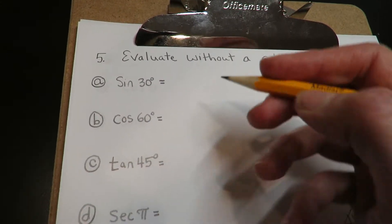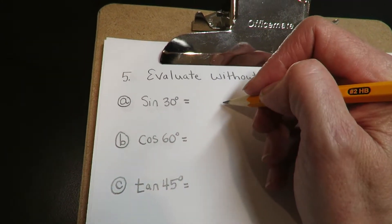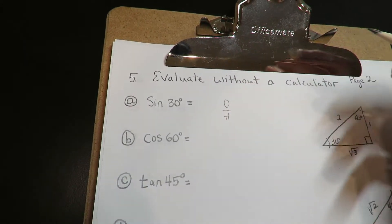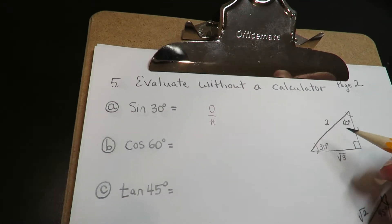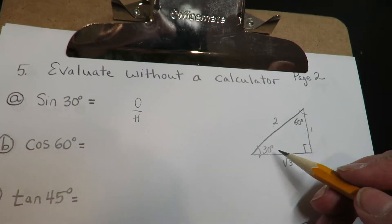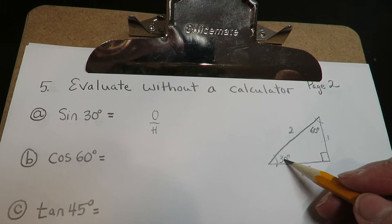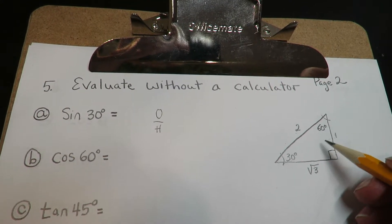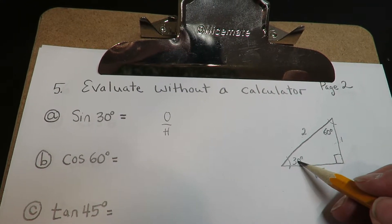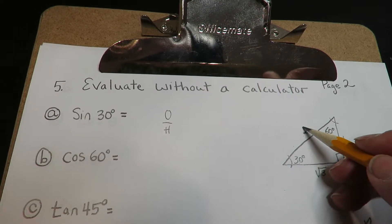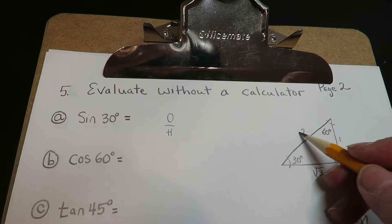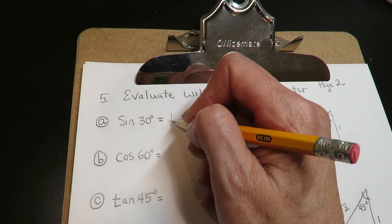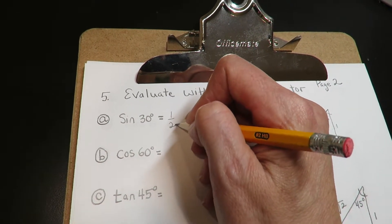Sine of 30 — that's going to be your opposite over your hypotenuse. I go to my 30 degrees: opposite of 30 is one and the hypotenuse is two. So opposite over the hypotenuse is one over two.